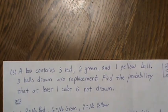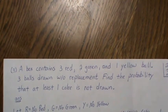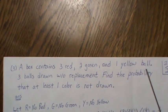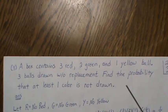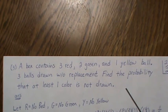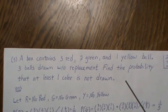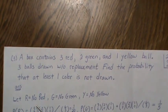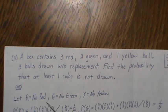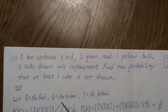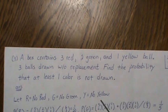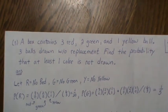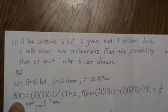Problem three: a box contains three red, two green, and one yellow ball. Three balls are drawn without replacement. Find the probability that at least one color is not drawn. We let R be the event no red are drawn, G be the event no green are drawn, and Y be the event no yellow are drawn. So we look at the probability of R — no red drawn.